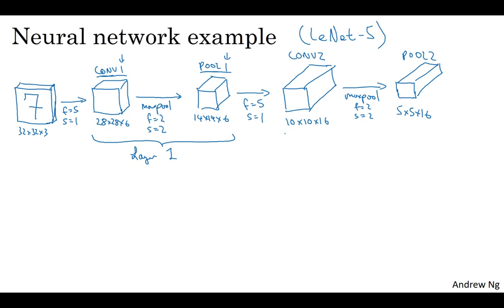And in our convention, this is layer 2, because this has one set of weights in the Conv2 layer. Now, 5 by 5 by 16, 5 times 5 times 16 is equal to 400.